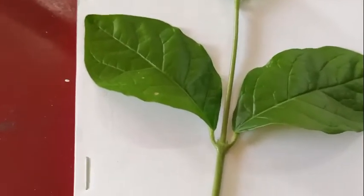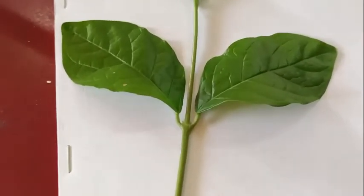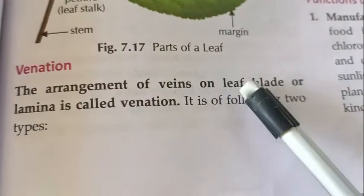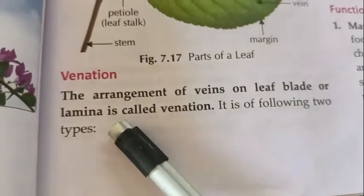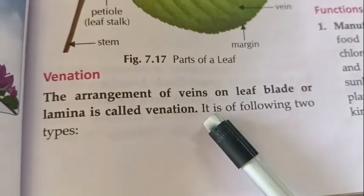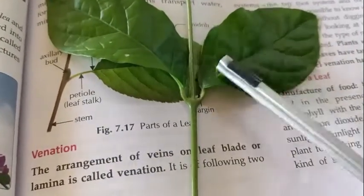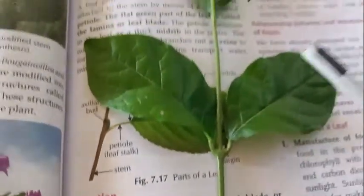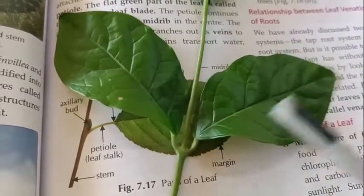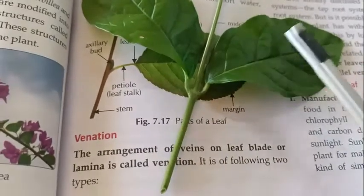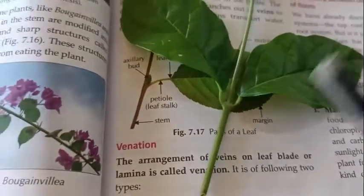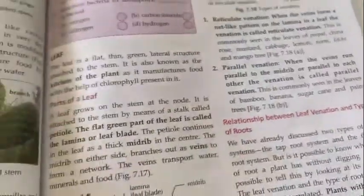Now we will see the next point: venation. The arrangement of veins on the leaf blade or lamina is called venation. The arrangement of veins on the lamina is called venation. On this basis there are two types of venation: the first is reticulate venation, and the second is parallel venation.